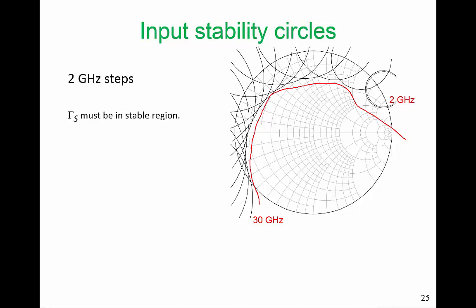It's actually saying that at 2 GHz we could possibly be unstable if Gamma S is in this region. What we want is we want our amplifier to be unconditionally stable. In terms of the input stability that we're looking at here, we want the amplifier to be stable no matter what the load is. If the antenna is suddenly disconnected, we want our circuit to be stable, for example.